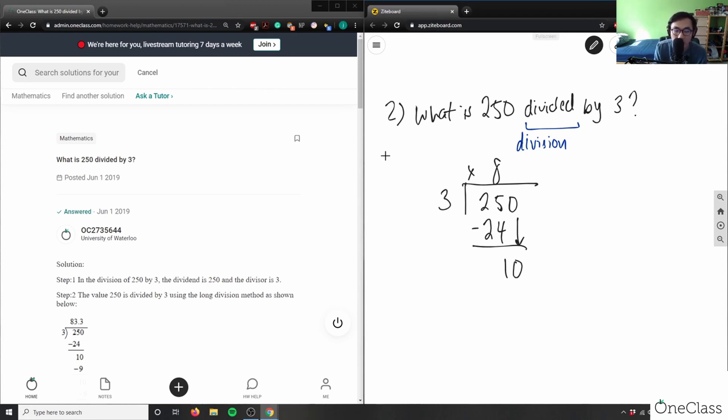3 times what equals 10 without going over? The closest number is 3. 3 times 3 equals 9. Minus that: 10 minus 9 equals 1, which means I have a remainder of 1. Nothing else to bring down.